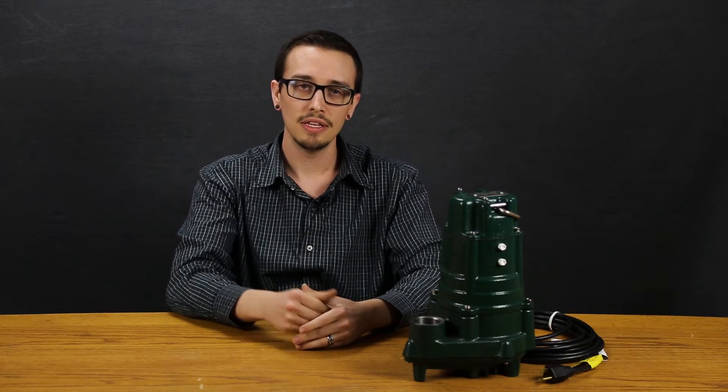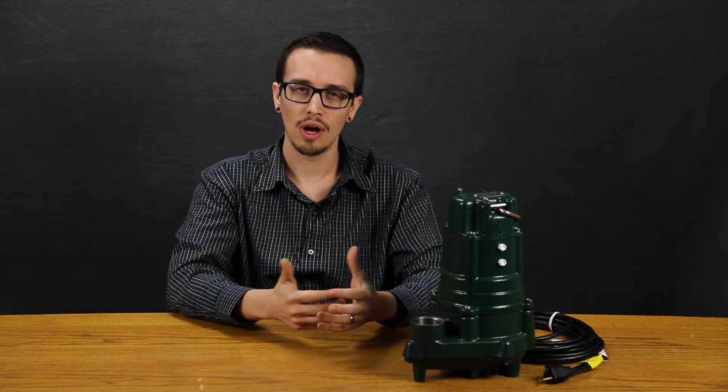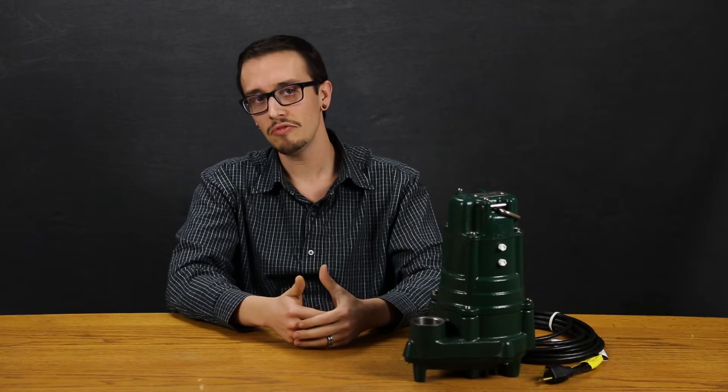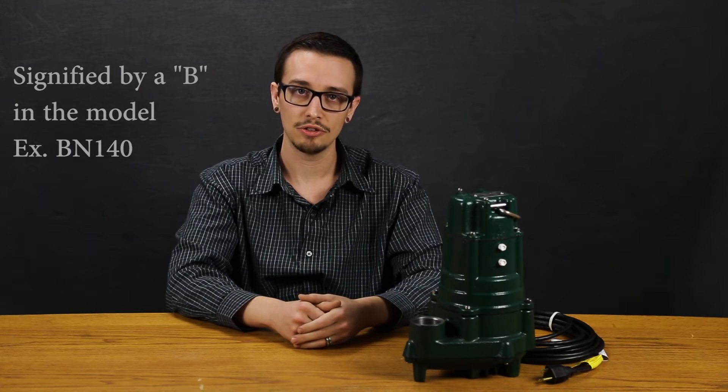We have here the Zoller model E140, which is a 230-volt, one-horsepower model. In this example, this E140 model is a non-automatic, which doesn't include any type of control or on-off switch. This pump is available with a wide-angle switch for a variety of different applications.